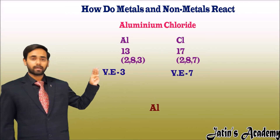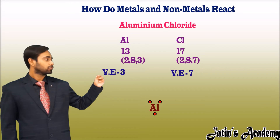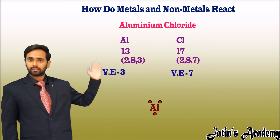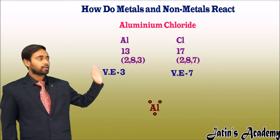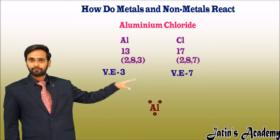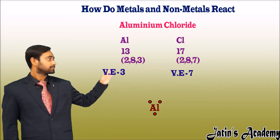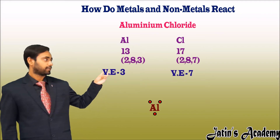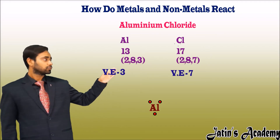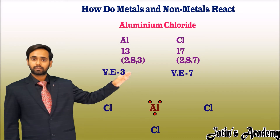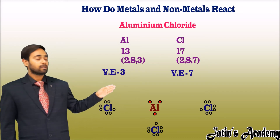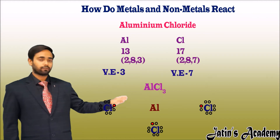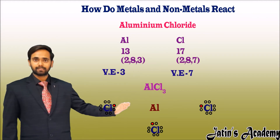Now, aluminum has 3 electrons. So, in order to complete its octet, it has to donate 3 electrons, and chlorine has to gain 1 electron. Chlorine only takes 1 electron, but aluminum has 3 electrons. So, 3 chlorine atoms come close to aluminum and each takes 1 electron, resulting in the formation of aluminum chloride, that is AlCl3.